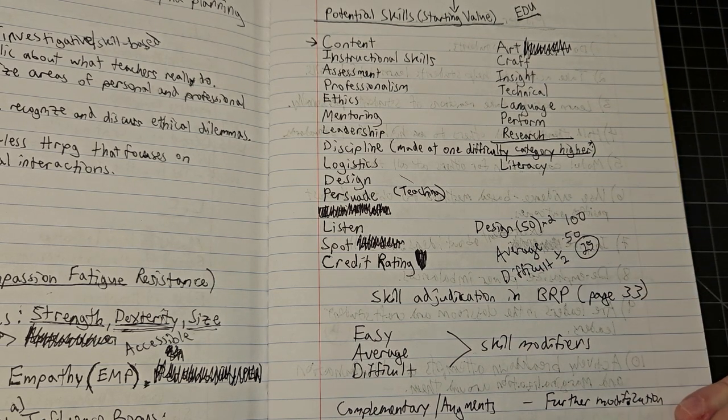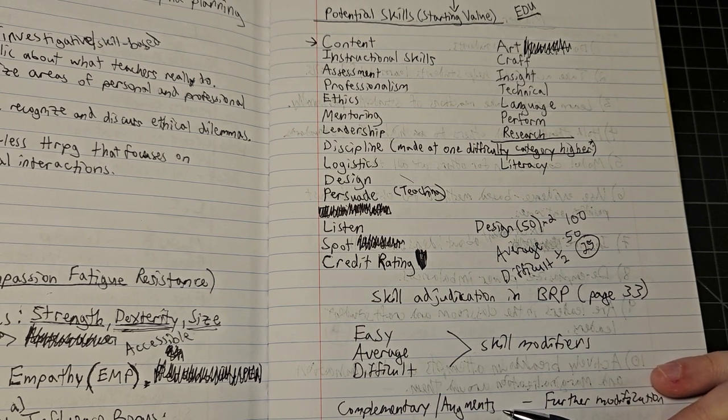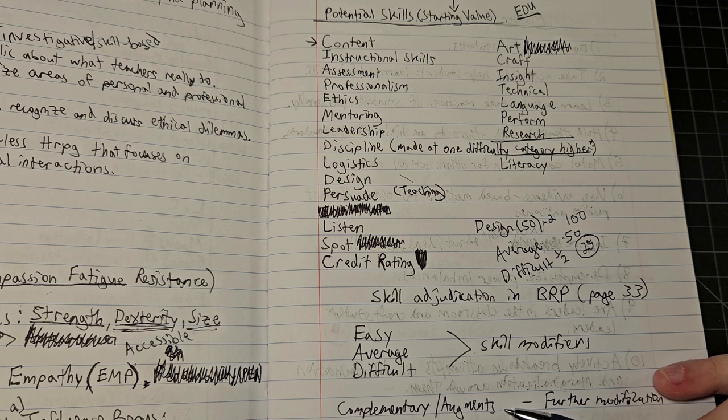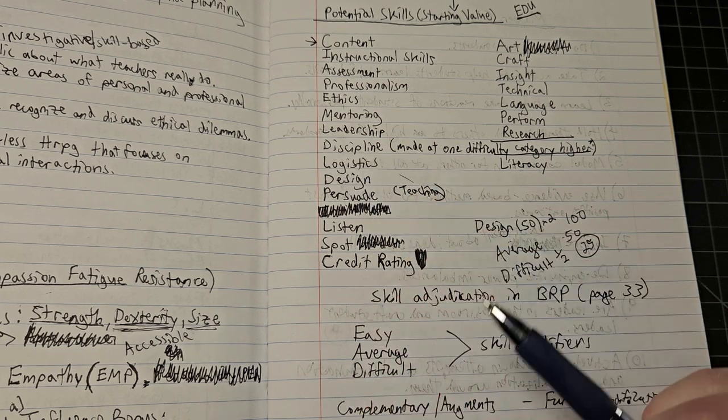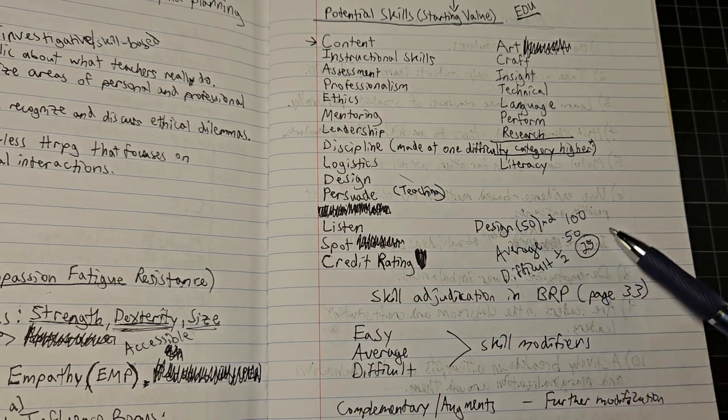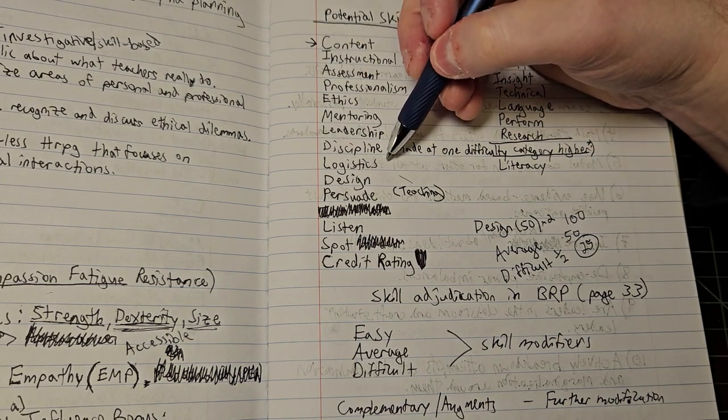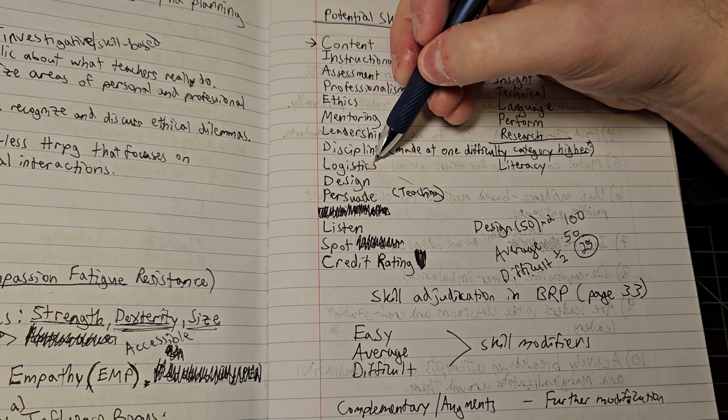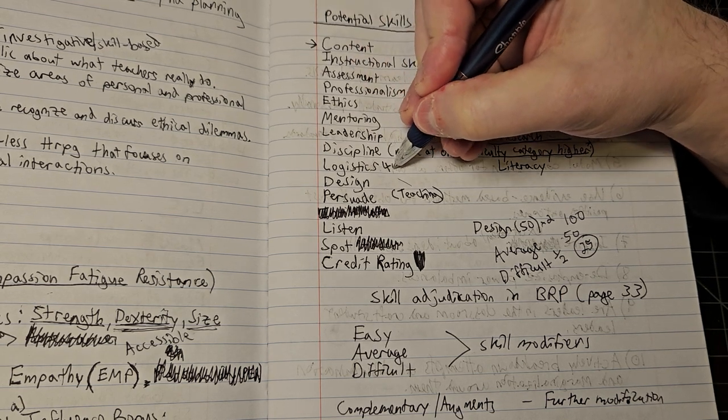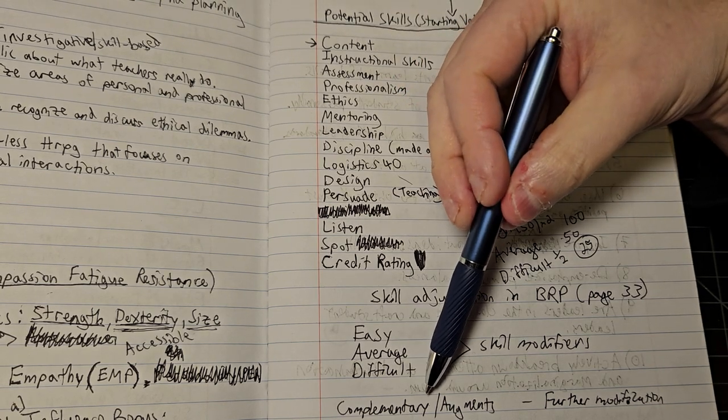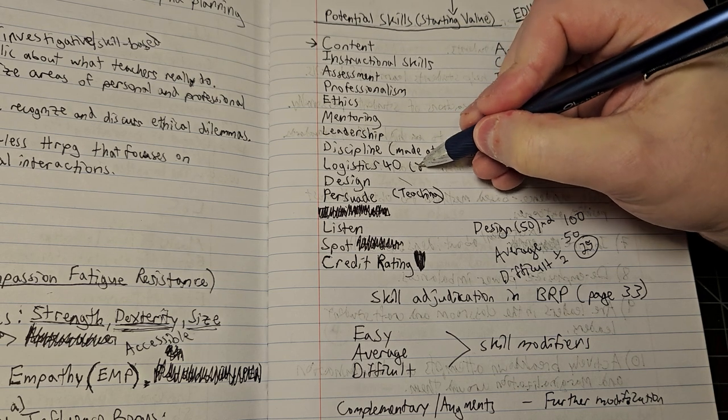In addition to this, the rules talk about how you can have complementary skills, or if you think about Rune Quest, we could also do skill augments. Complementary skills is where you use one skill to provide a bonus to another. A big part of effective design is logistics. So let's say my logistics score were 40. Using complementary skill modifiers would mean taking the one-fifth value for logistics, which is 8.